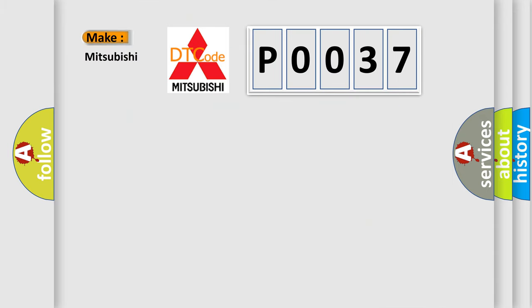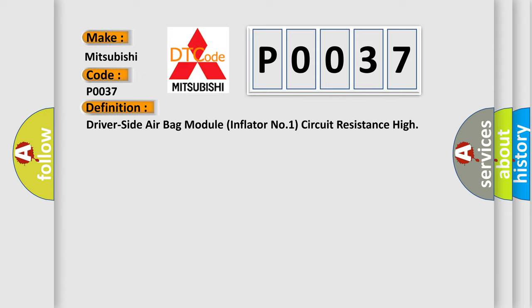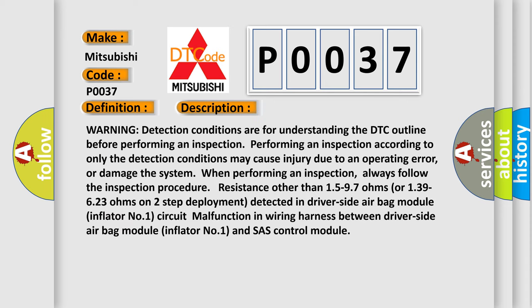So, what does the diagnostic trouble code P0037 interpret specifically for Mitsubishi car manufacturers? The basic definition is: Driver side airbag module inflator number one circuit resistance high. Warning detection conditions: resistance other than 15 to 97 ohms or 139 to 623 ohms on two-step deployment. Detected in driver side airbag module inflator number one circuit — malfunction in wiring harness between driver side airbag module inflator number one and the chassis control module.